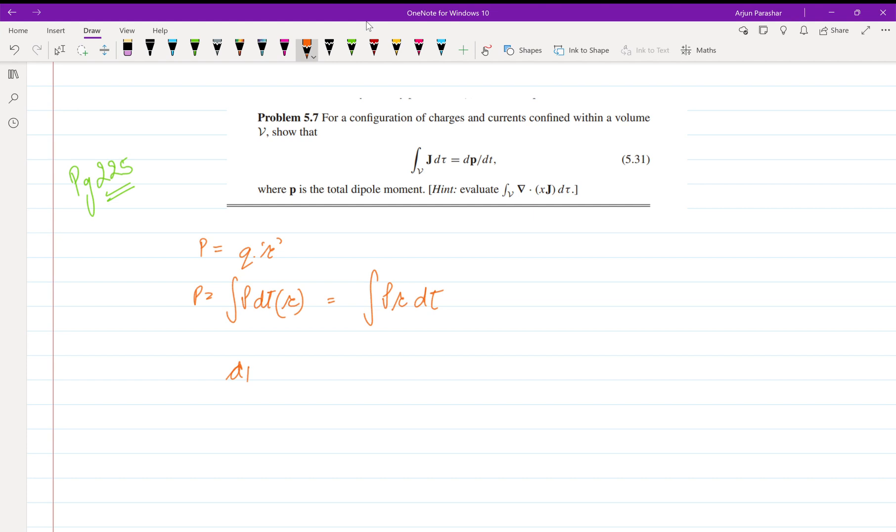We are given dp by dt, so let us put this value. d by dt integration rho r d tau. Now taking the derivative, we get d rho by dt into r into d tau.